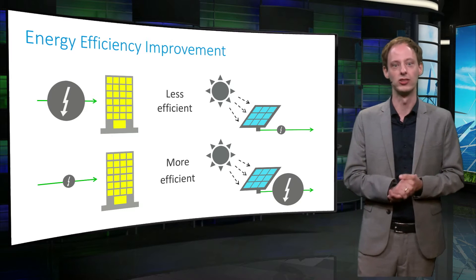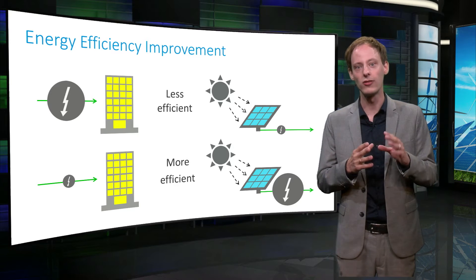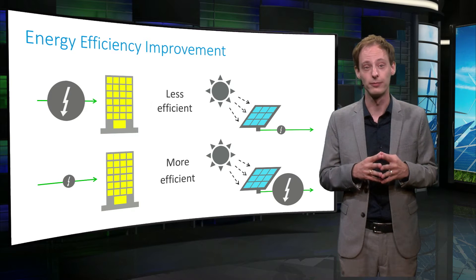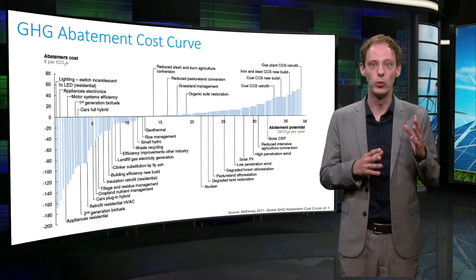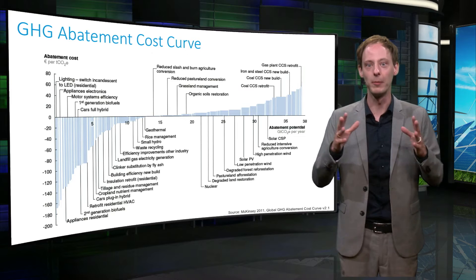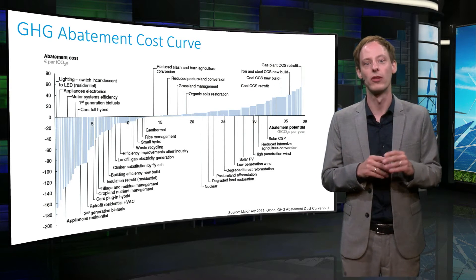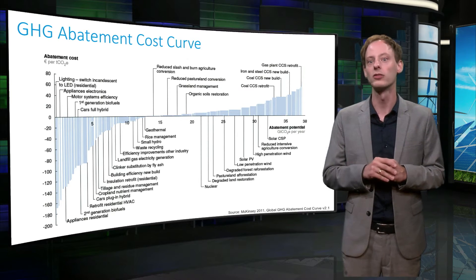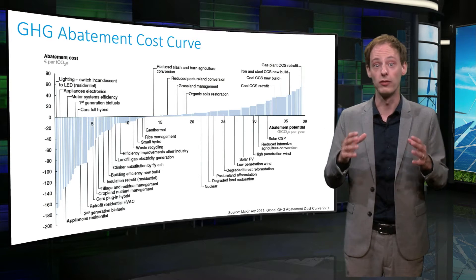How can we actually achieve this? Before we dive into efficiency policies, let's take one step back and first get a broader picture of the opportunities we have. Here in this famous picture we see the greenhouse gas abatement cost curve, developed by McKinsey, and it ranks relevant options to reduce emissions from the lowest to the highest associated cost. The width of the bars represents the abatement potential, so the wider the bar, the more CO2 that could be avoided.